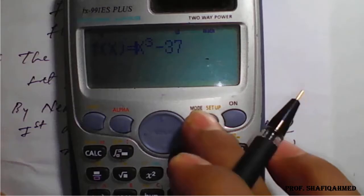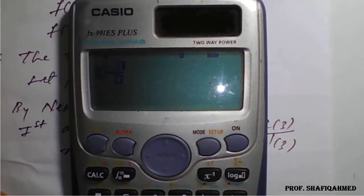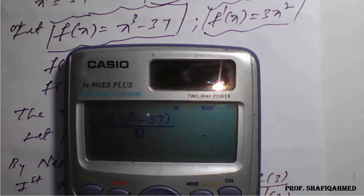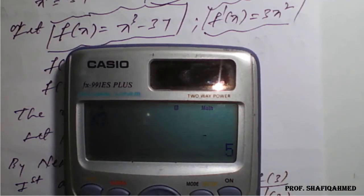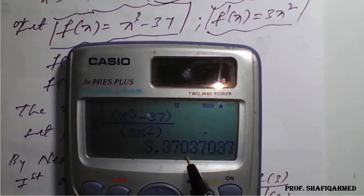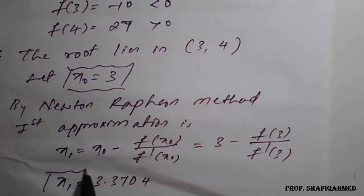We will type this formula in the calculator: alpha x minus open bracket, then f(x) which is alpha x cubed minus 37, close bracket, divided by open bracket, f'(x) which is 3 alpha x squared, close bracket. Go for calc option, enter x₀ value as 3, press equals, and the answer comes as 3.3703... which we round up to 3.3704. So the first approximation is x₁ equals 3.3704.